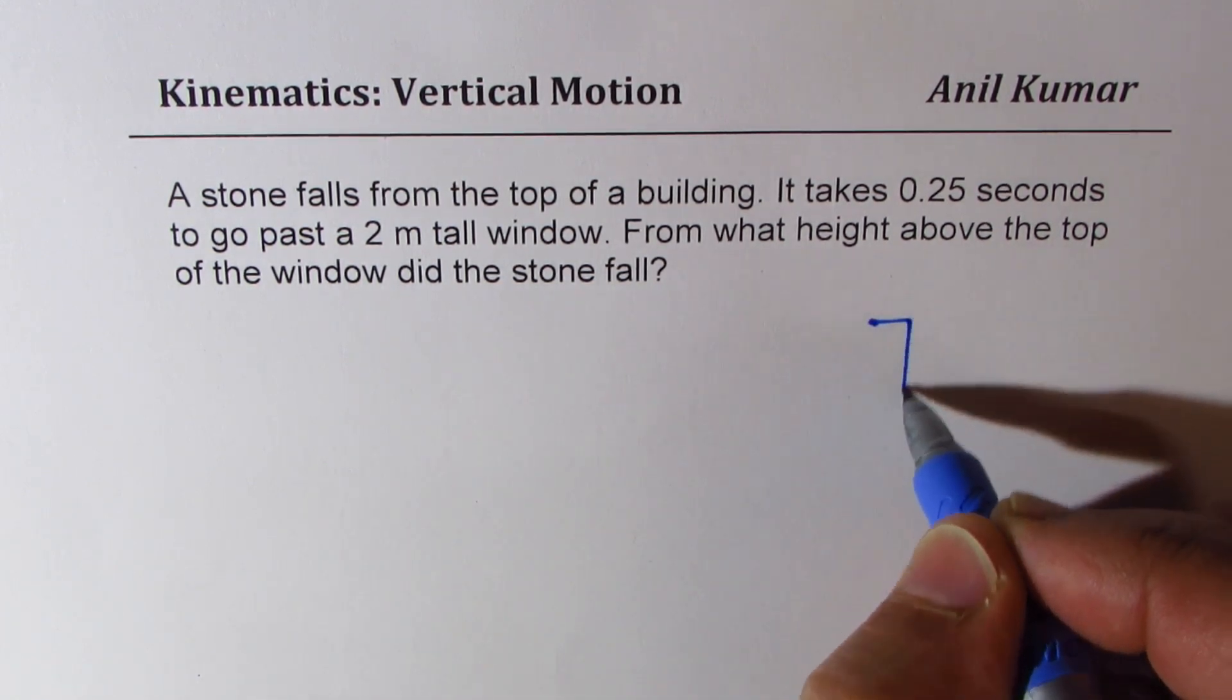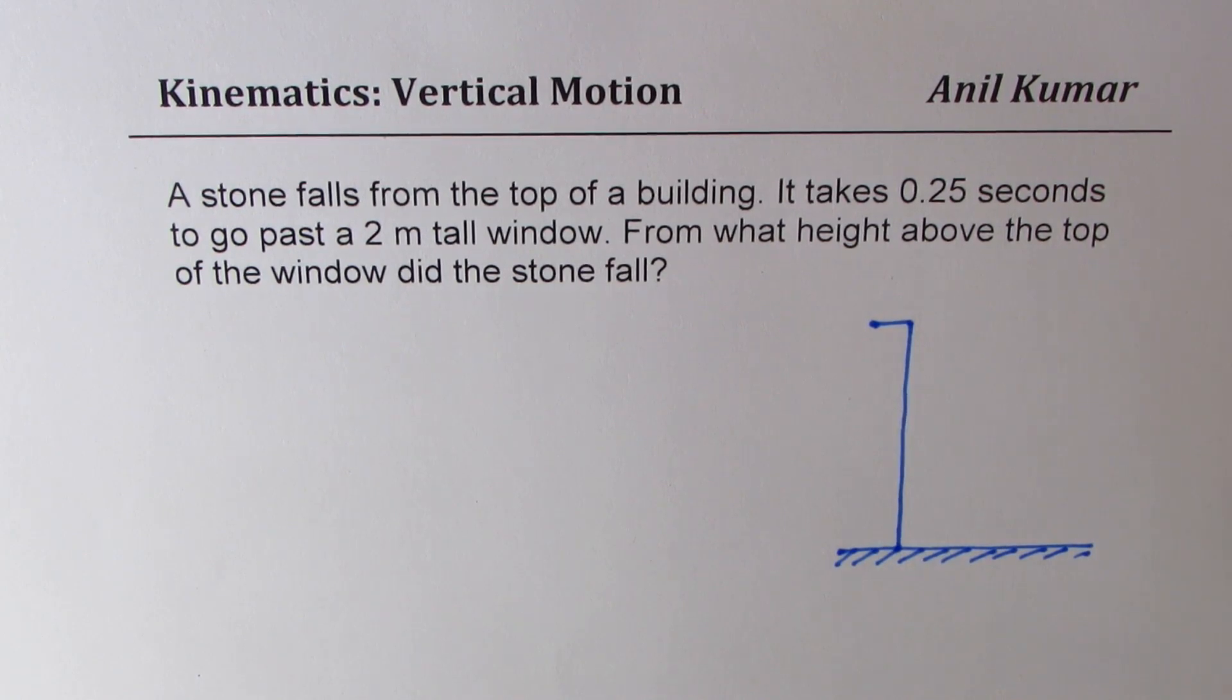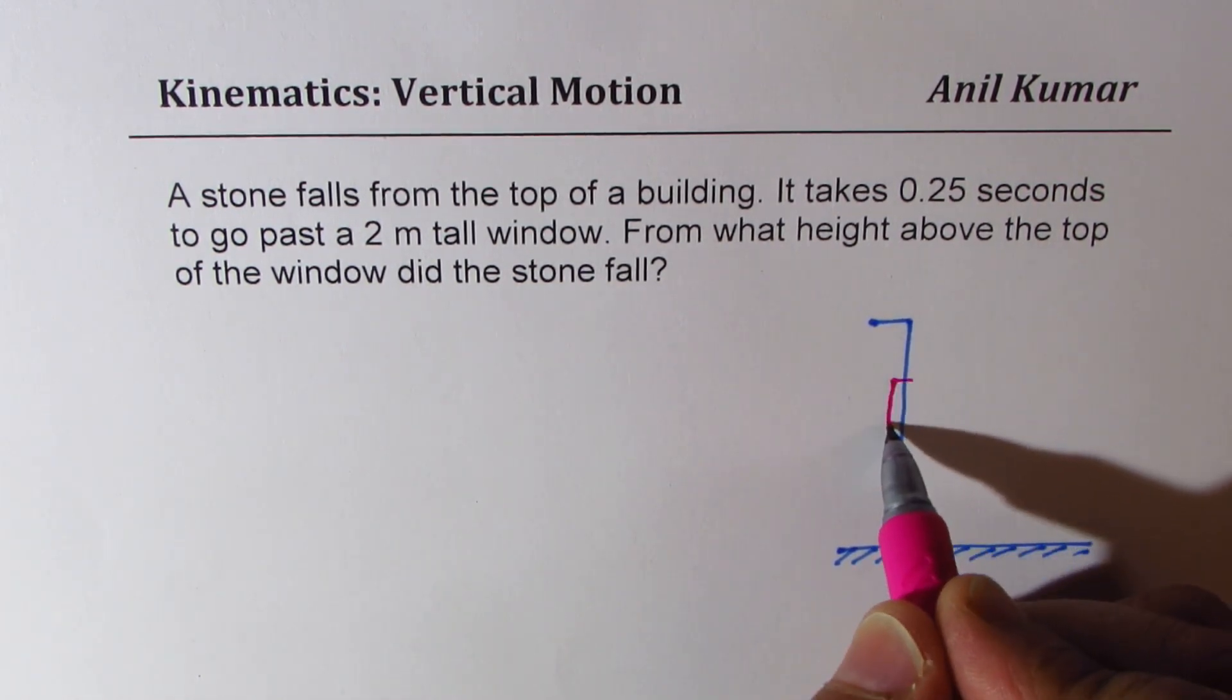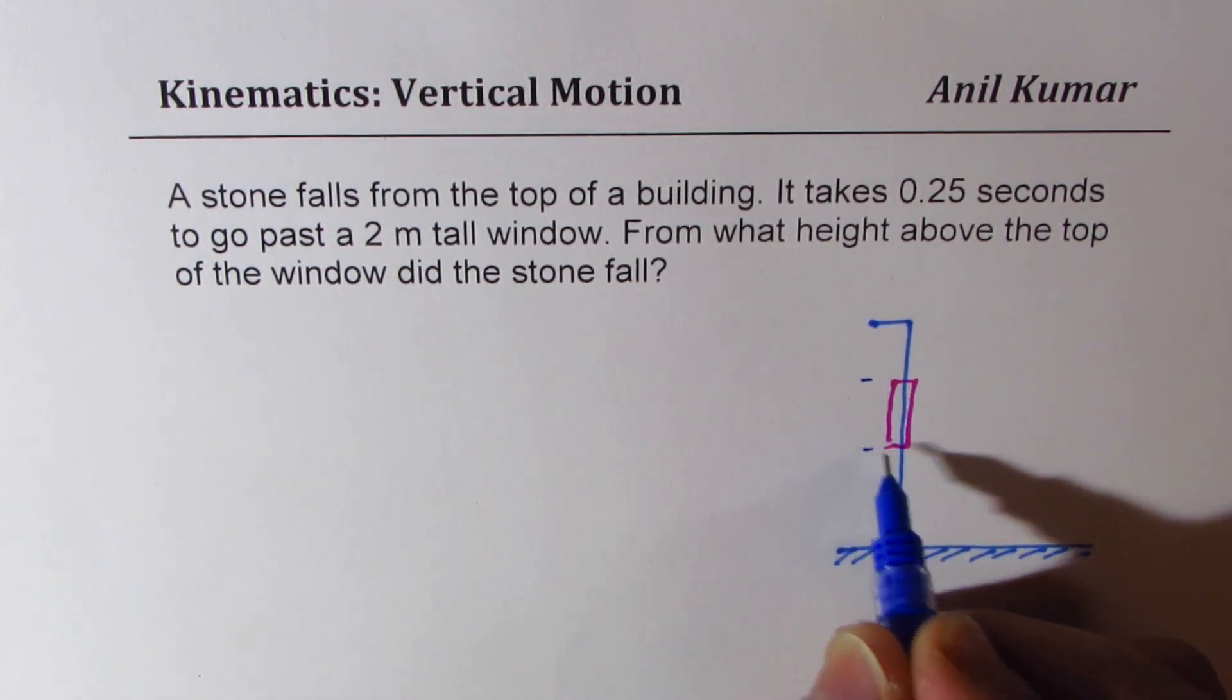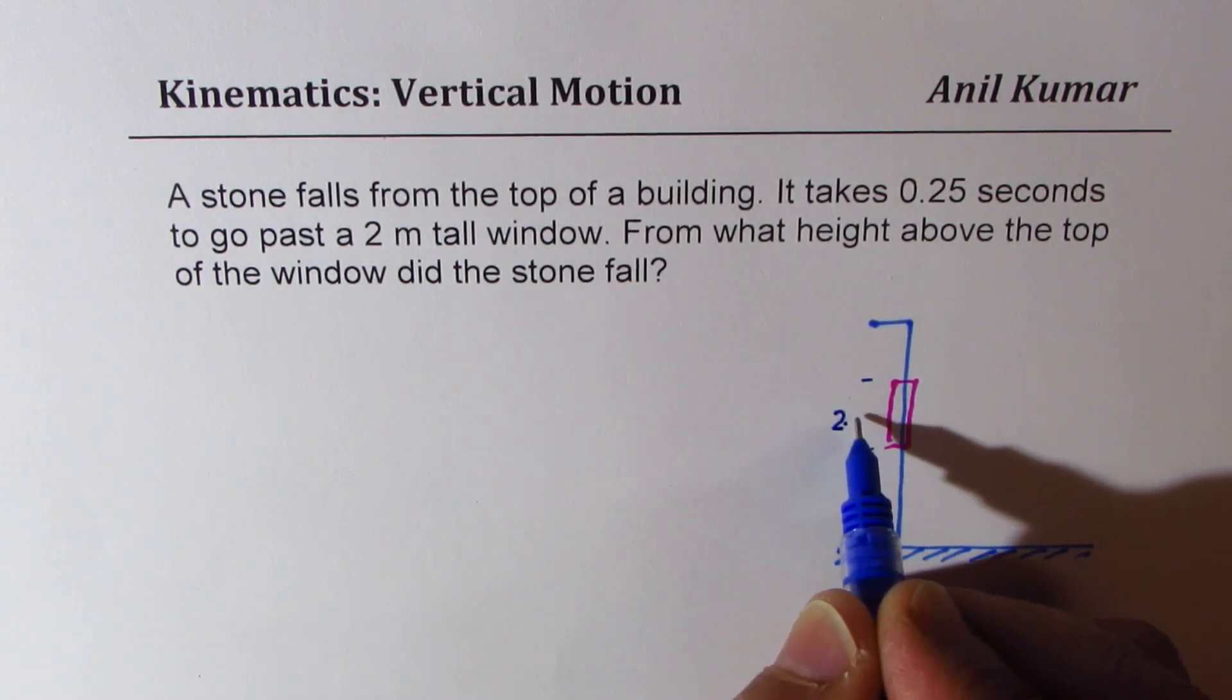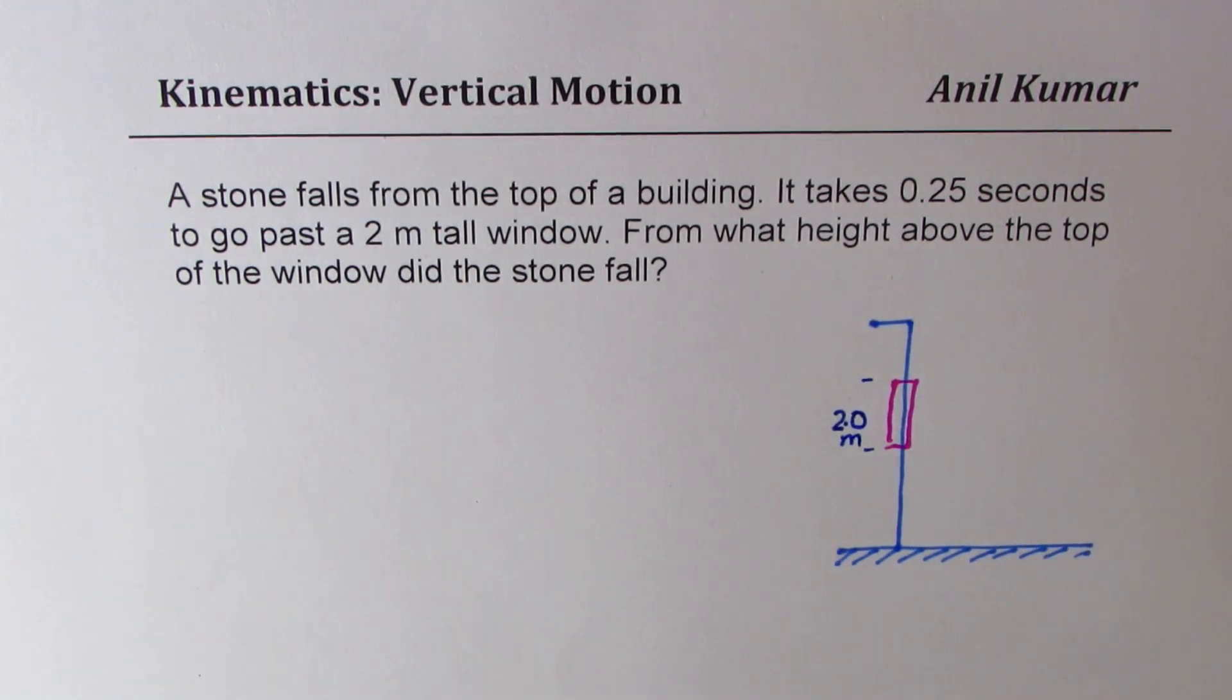Let's say that's the building. The window is somewhere here. The height of the window is given to us as 2 meters. I will use 2.0, considering the significant digits.